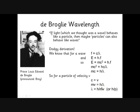MV you'll remember is momentum, sometimes just given the symbol p. So this wavelength is the wavelength for a particle of mass m going at a velocity of v, and it's called the de Broglie wavelength.